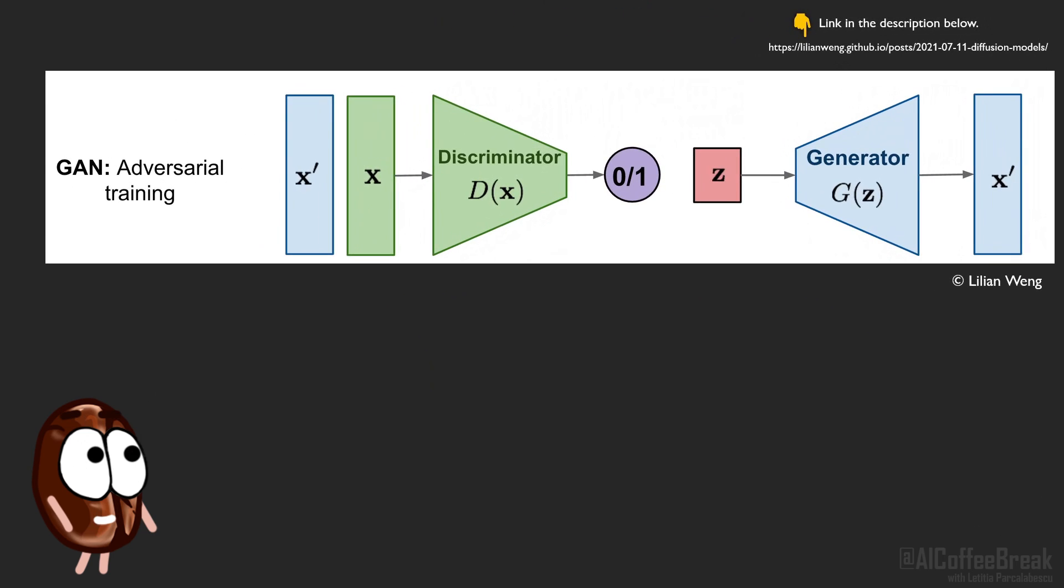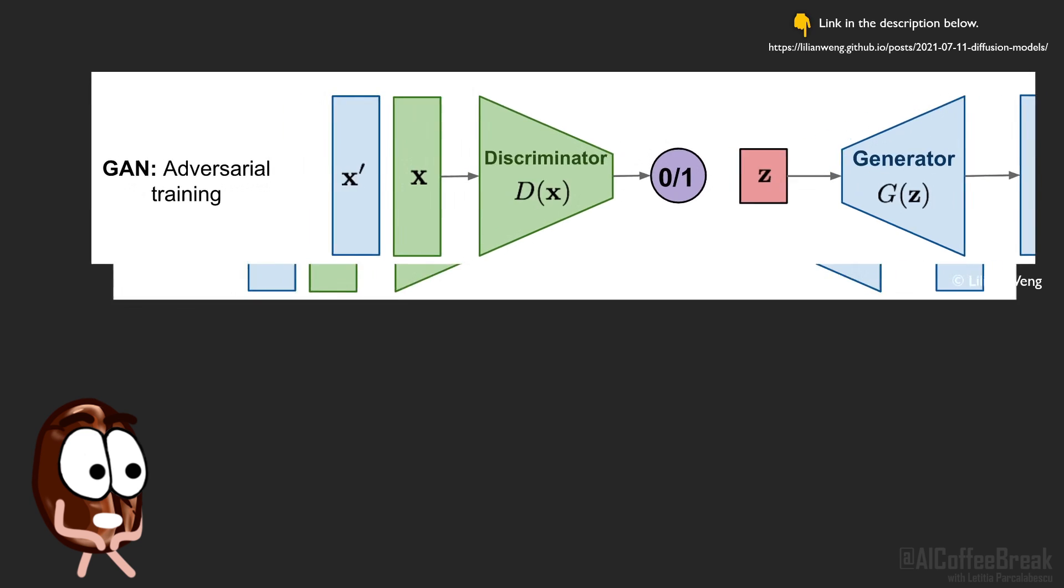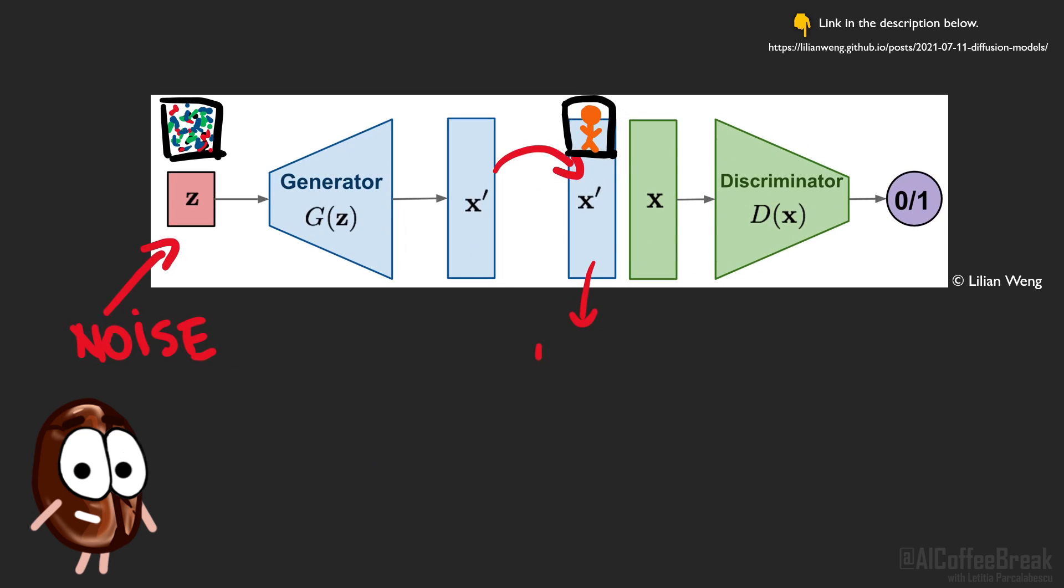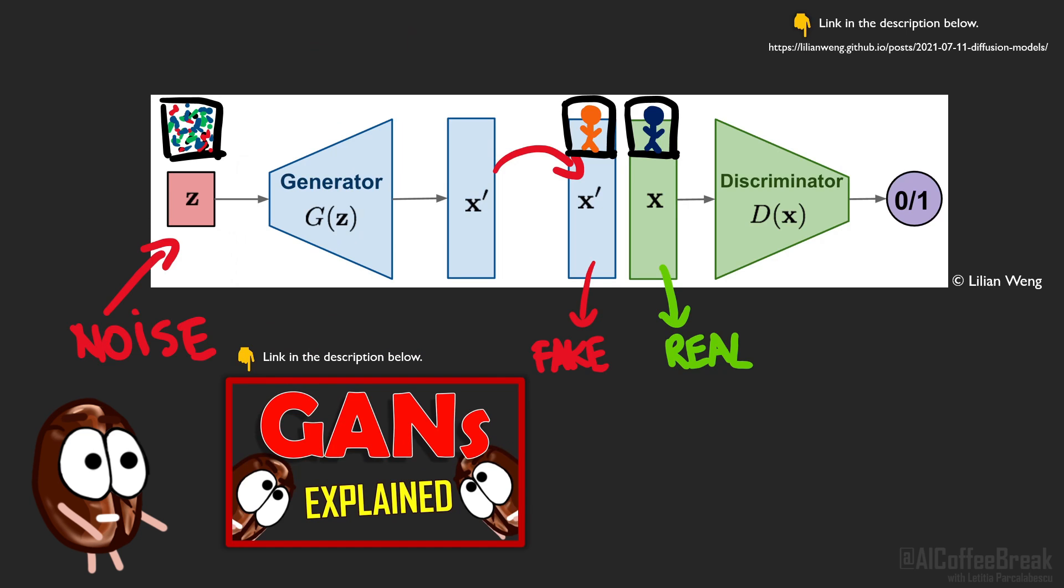First, we have generative adversarial networks, or short, GANs. They generate images from noise, much like a diffusion model, but this is where the commonalities stop. So we have this generator neural network starting from noise or from some informative conditioning variable, like a class label or a text encoding, and it generates something that should look like a realistic image. The success of the generator is rated by the discriminator, who labels the image as being either a true image coming from the training set, or a fake one synthesized by the generator. If you are curious about how GANs work in more detail, check out our previous video about this.